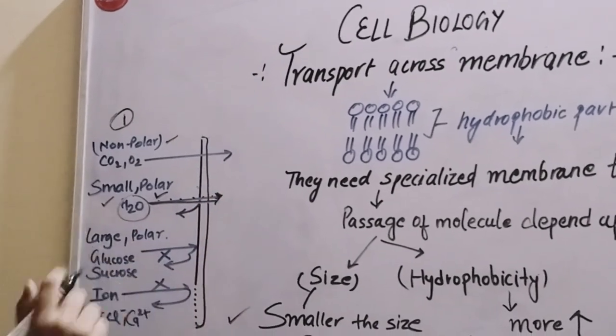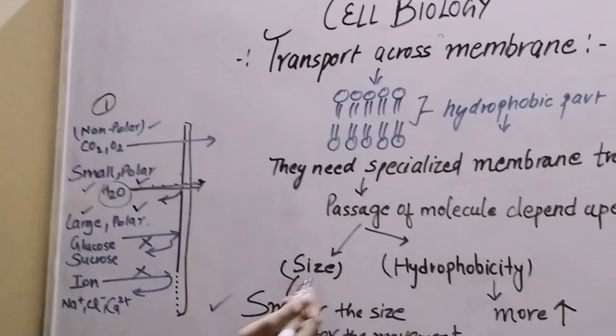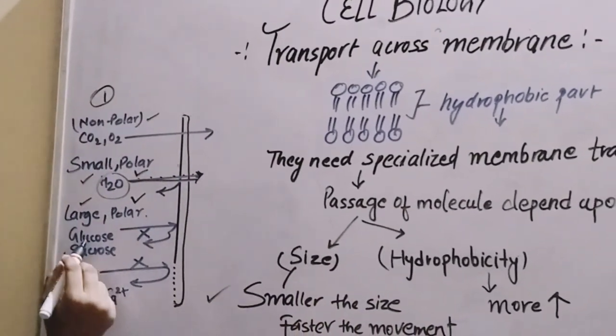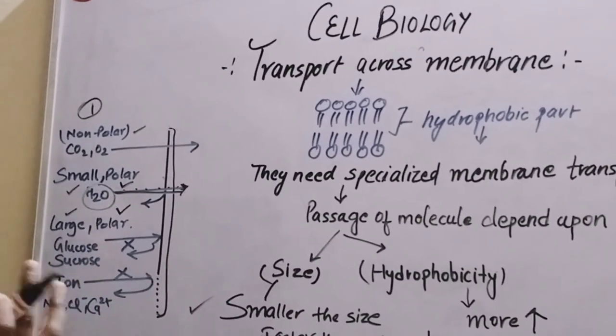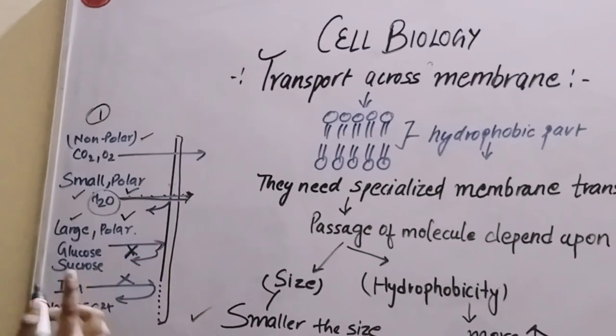Our third example is large and polar molecules. The two criteria are not fulfilled. So molecules like glucose or sucrose, which are large molecules, will not pass easily.